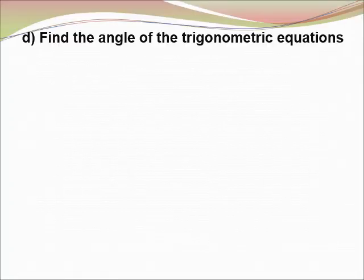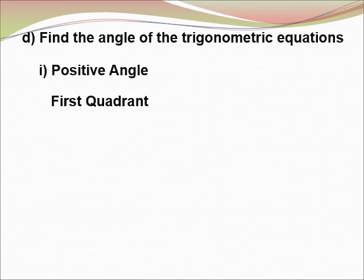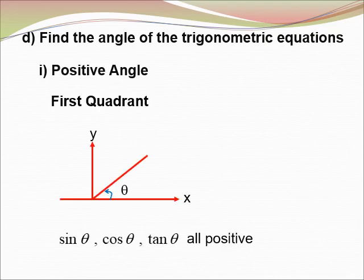Find the angle of trigonometry equations for positive angles in the first quadrant — sin theta, cos theta, and tangent theta are all positive. We know that for special angles we work in the first quadrant. If the equation is in the second quadrant, third quadrant, or fourth quadrant, then we want to find the value without using a calculator. So we want to change from those quadrants to the first quadrant using the formulas below.